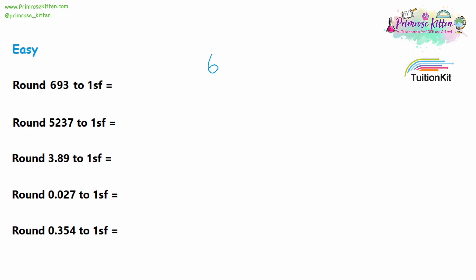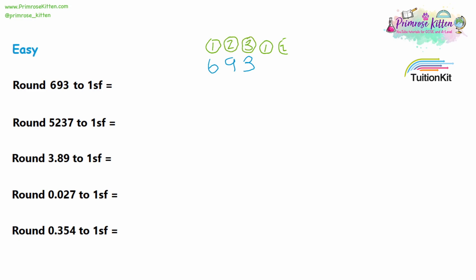So the first question, we're going to round 693. Using our method, we are going to label the different place values we have. In the first video of place value rounding, we would label units, tens, and hundreds. In the second video, which was decimal place rounding, we would round the decimal places — the first, second, and third decimal places. In this question, we are rounding significant figures, so we're going to be labelling the significant figures: the first, second, and third significant figures.